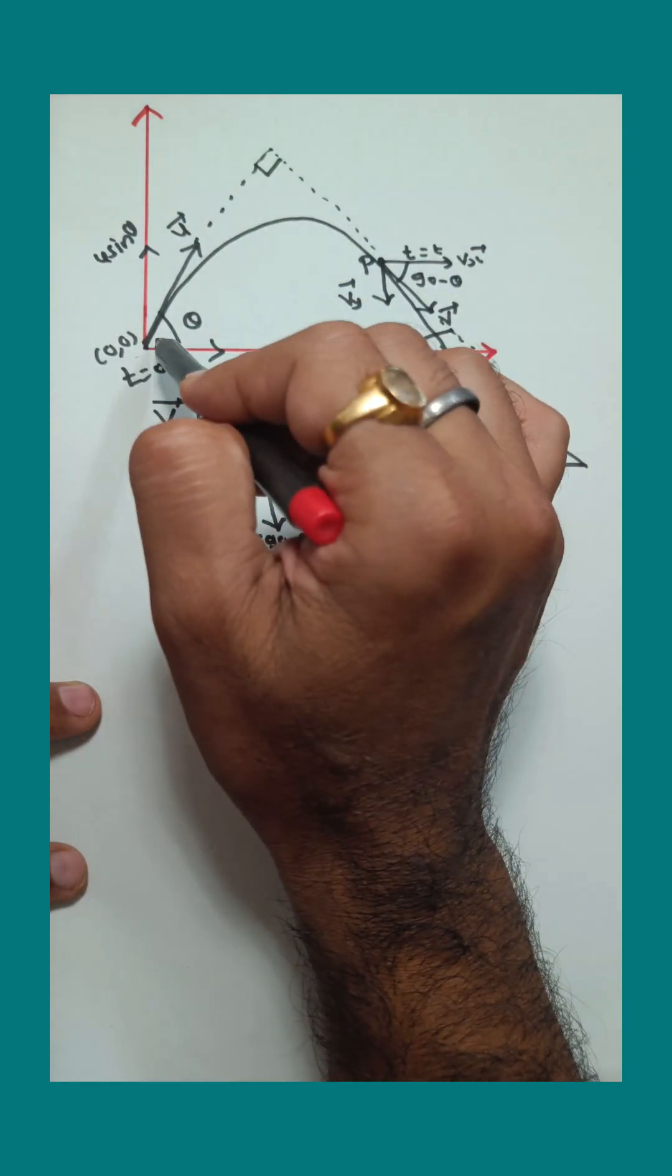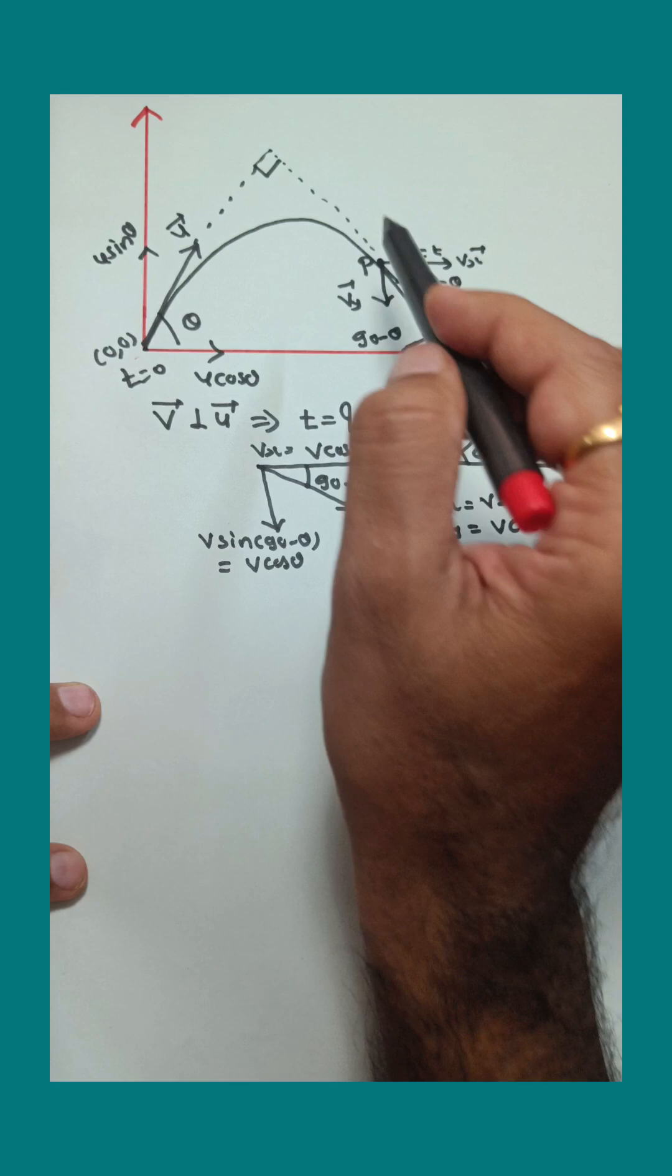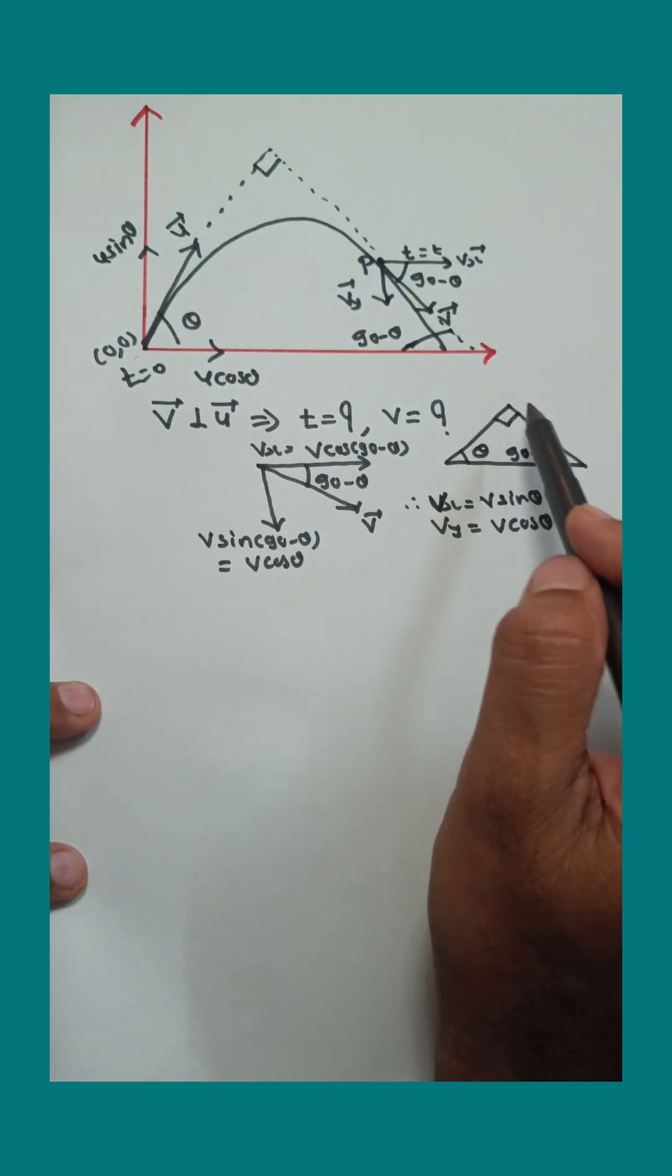Now consider this perpendicular triangle. One angle is theta, the second is 90°, and the third is 90° minus theta.